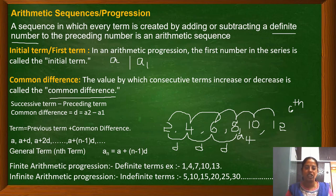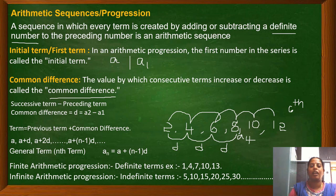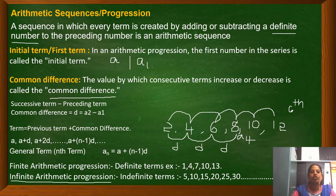Progressions with a countable number of terms are called finite arithmetic progressions. When we see dotted symbols (ellipsis) at the end of a sequence, it means the sequence does not end and we cannot count the number of terms. These are called infinite arithmetic progressions. So far you have learned the meaning of sequences, terms of sequences, arithmetic sequences, and the general form of an arithmetic sequence.